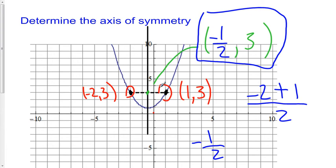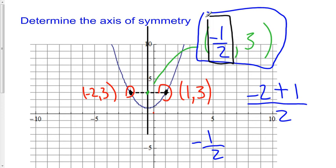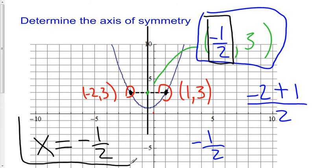For the axis of symmetry, I don't actually want a point — I want an equation of a vertical line. The vertical line happens to pass through this point at X equals negative one half. So the equation for my axis of symmetry is X equals negative 1 over 2. This is the equation of a vertical line passing through the point (negative 1/2, 3). Let's do another example.